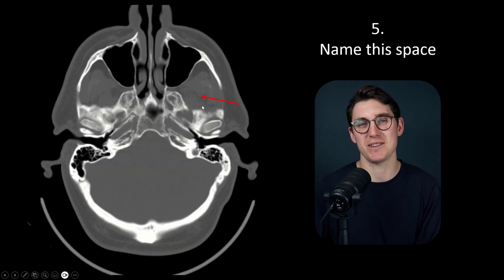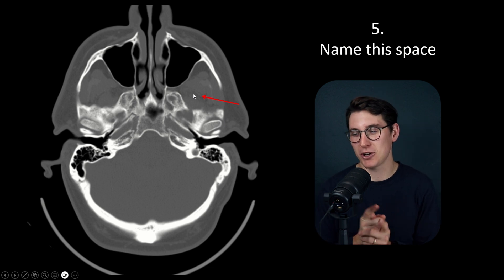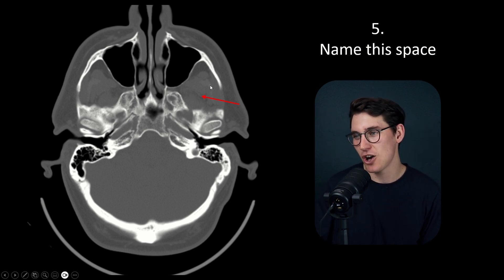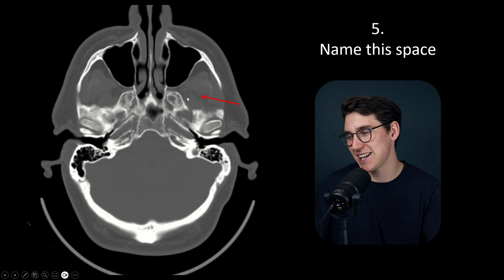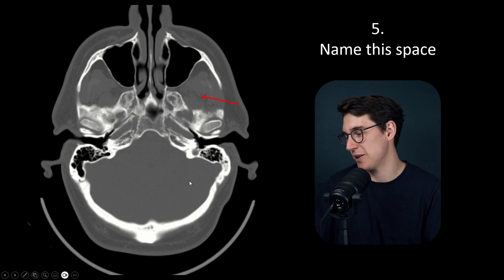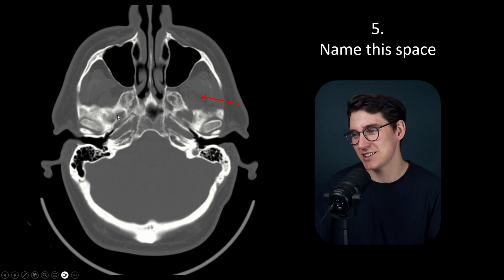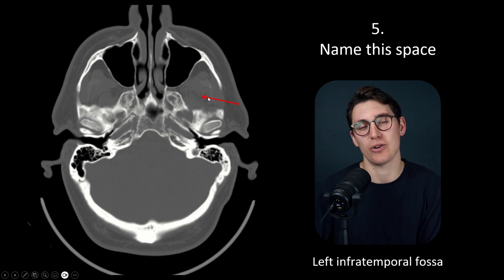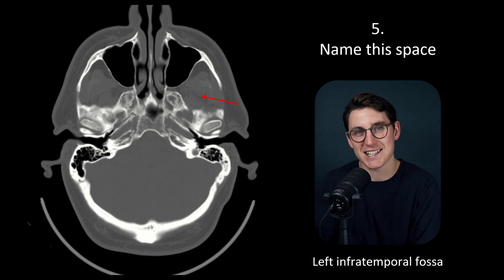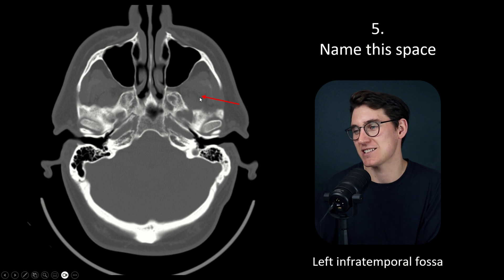Question 5 asks us to name this space. This is a common question because people can get confused about where we are — often people look at this and think we're intracranial, within the cranial vault, but this is actually an extracranial space. Here is the posterior cranial fossa; we can see the carotid canal, the greater wings of the sphenoid, the foramen ovale, and the head of the mandible. This space lies underneath the middle cranial fossa, and it's known as the infratemporal fossa — 'infra' meaning under the temporal fossa. We're on the left-hand side here.